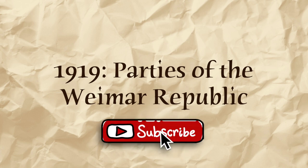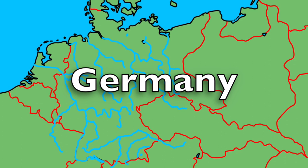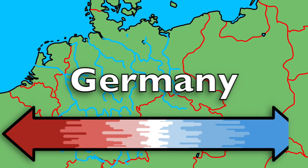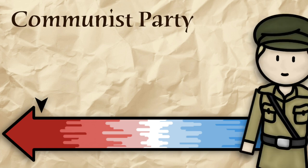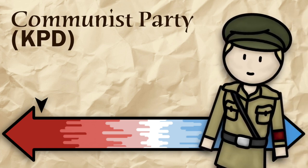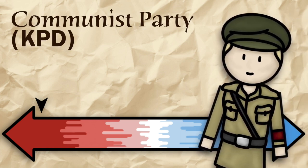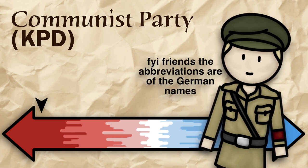1919 — the parties of the Weimar Republic. Germany, throughout the course of the Republic, has a range of parties from far-left to far-right. The main party on the far-left are the Communist Party, shortened to KPD. It might be useful to note that the abbreviations we use are abbreviations of the German names for the parties, which is why they might not seem to make sense.